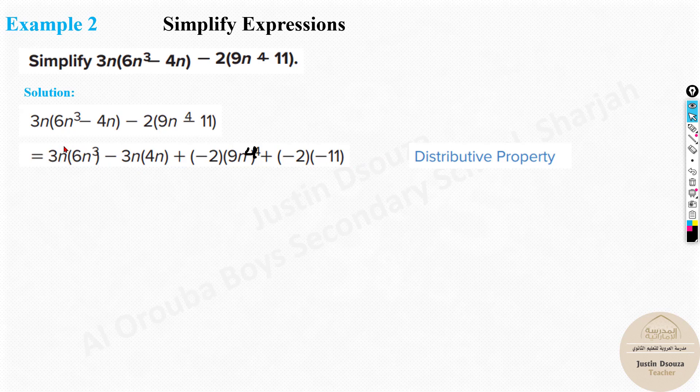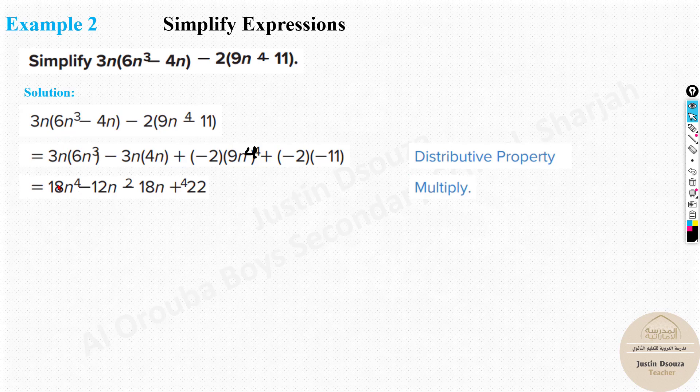First you need to multiply the numbers. 3 times 6 is 18. n power 1 multiplied with n power 3. Add the exponents. It will be n power 4. Minus 3 times 4 is 12. n and n is n squared. Minus negative 2 times 8 is 18. n to the power 4. Plus negative times negative is positive 22. This is the answer. Oh sorry, you can simplify it further.